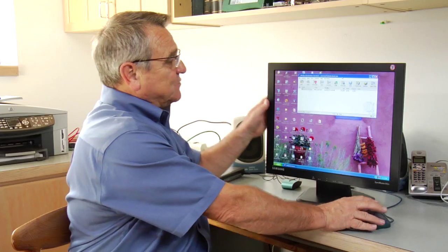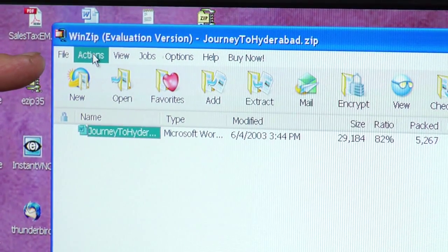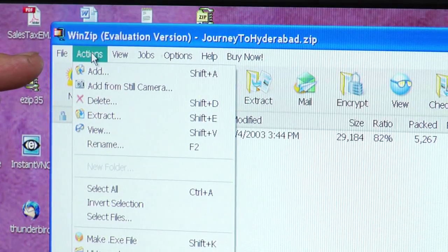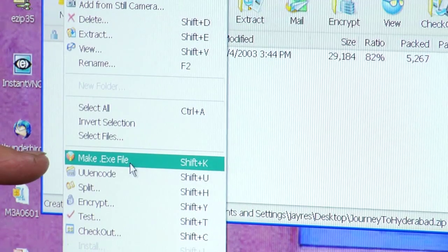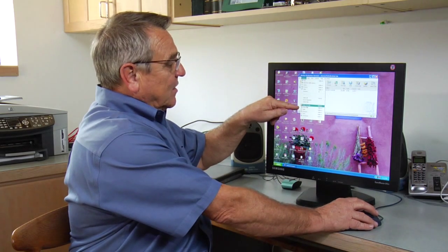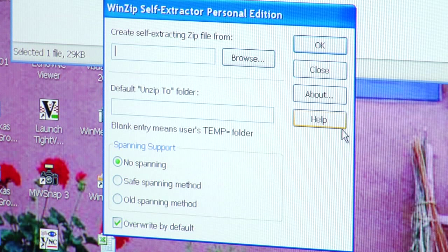And the way that you do that in this program is you highlight the file, you click on actions and you go down to make exe file or do a shift to K for keyboard. Clicking on make exe file allows you to turn this into a self-extracting file.